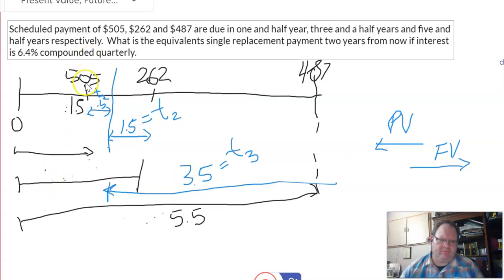So this chunk of money is moving ahead to the focal date. So it's going to be future value. This chunk of money is moving back to focal date. So it's going to be present value.